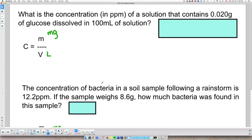All right, so let's look at the actual problems. The first one says, what is the concentration in parts per million of a solution that contains 0.02 grams of glucose dissolved in 100 mL of solution.